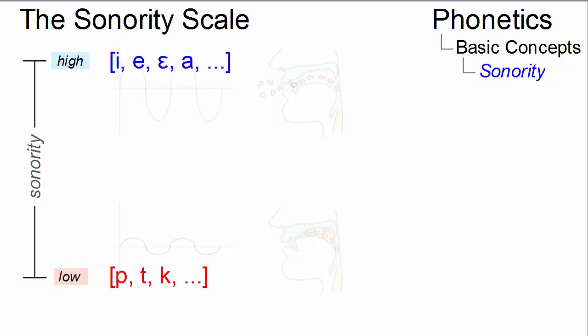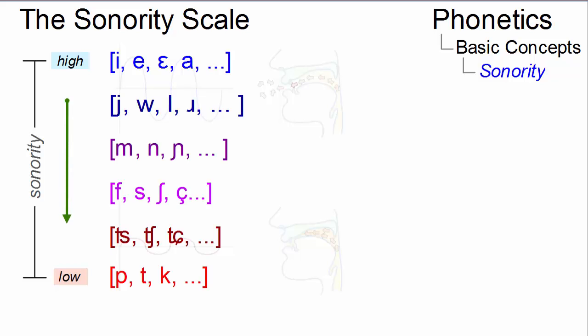They involve the lowest amplitude and the biggest air pressure differences. In between, we have approximants, nasals, fricatives, and affricates.